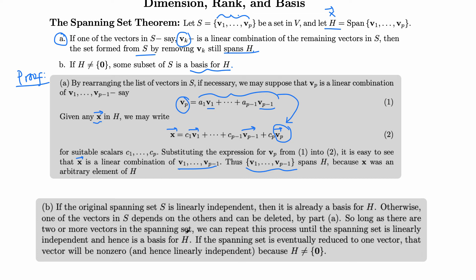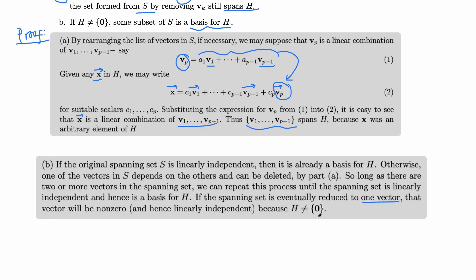We repeat this process of deleting vectors we don't need until the spanning set is linearly independent, and hence is a basis for H — they already span, and once linearly independent, they form a basis. If the spanning set is reduced to just one vector, that vector will be non-zero (since H is not just the zero vector), and a single non-zero vector is linearly independent. This completes the proof.